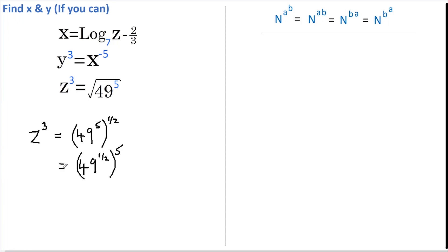This is still Z to the 3. And now 49 to the half is the square root of 49, which is 7. So this is 7 to the power of 5, still Z to the 3.